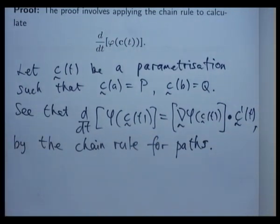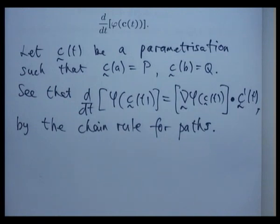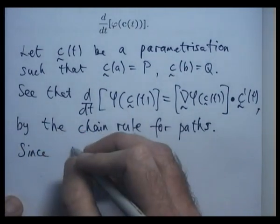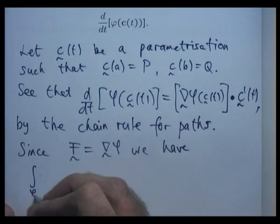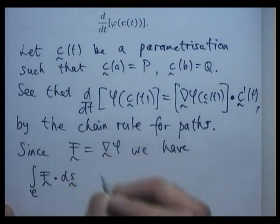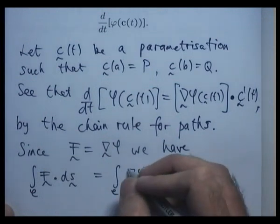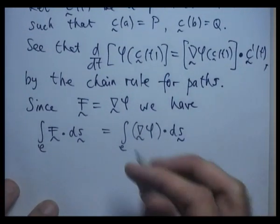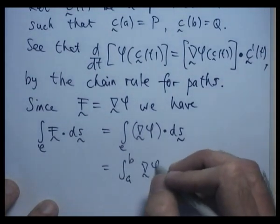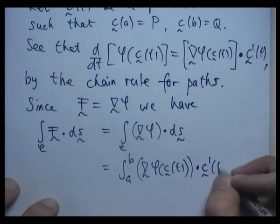Okay, so now we're going to use the assumption that F is a gradient field. All right. So our line integral can be written in the following manner. So what we're going to do now is incorporate the parameterization and you'll see that we end up with a beautiful cancellation.